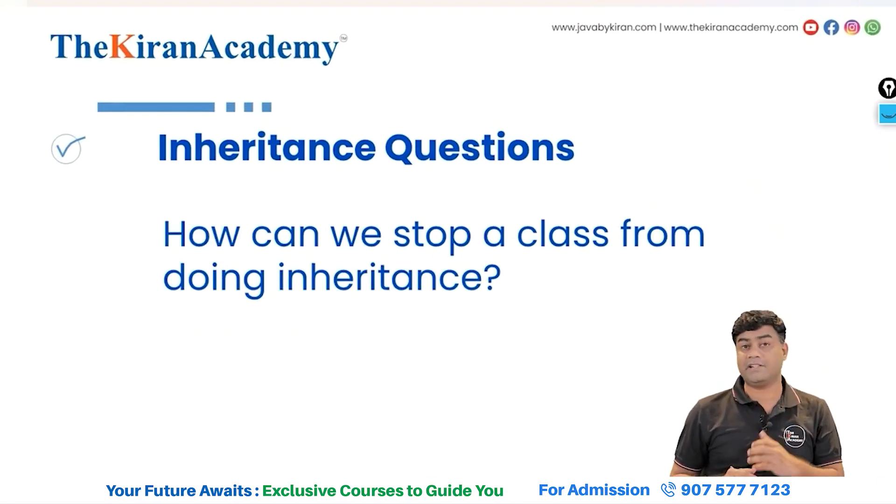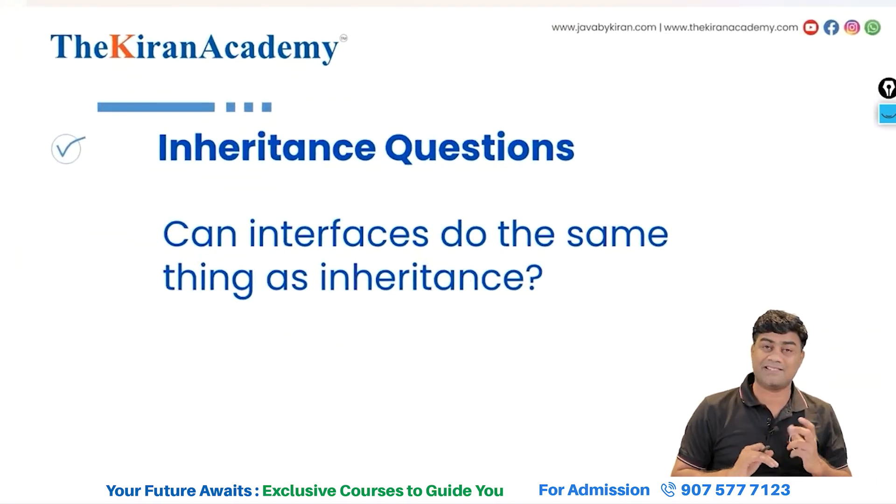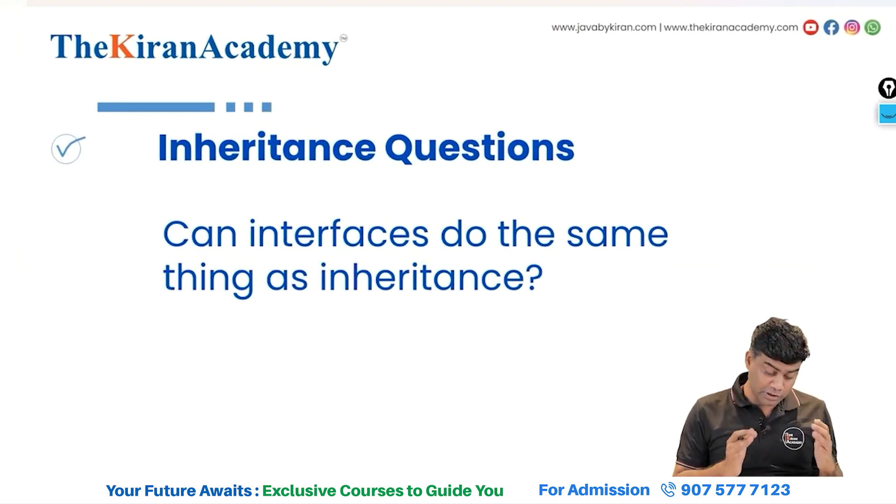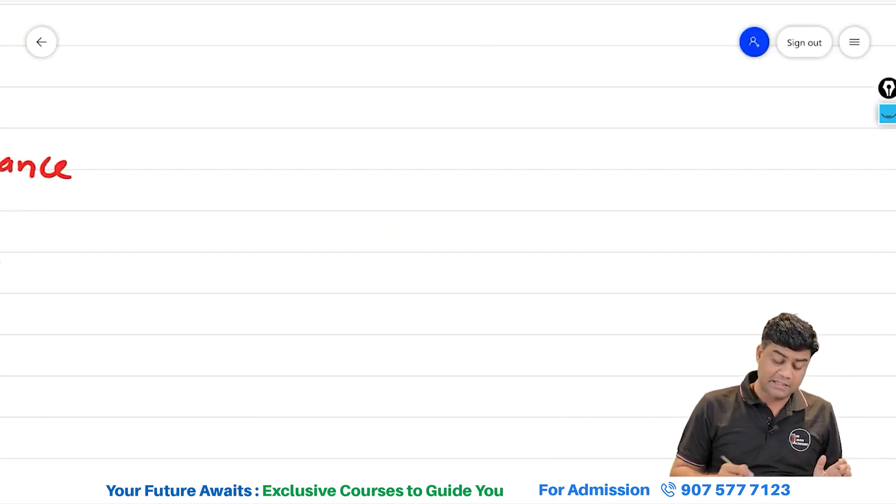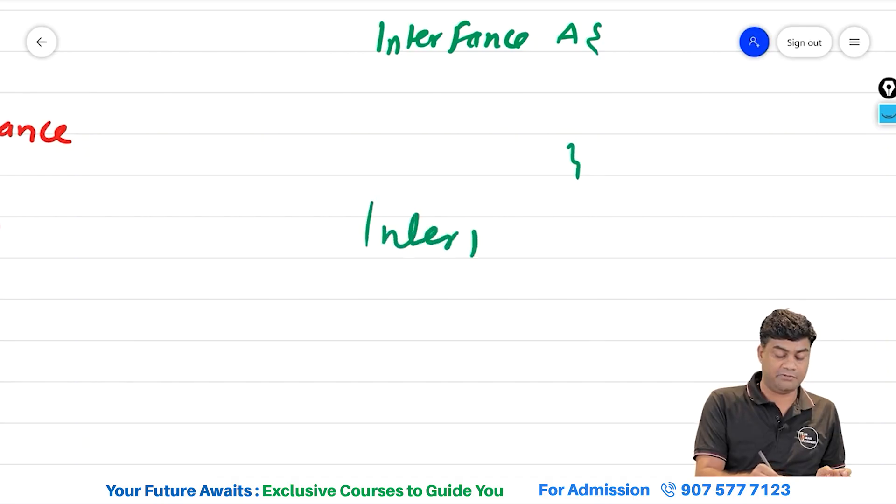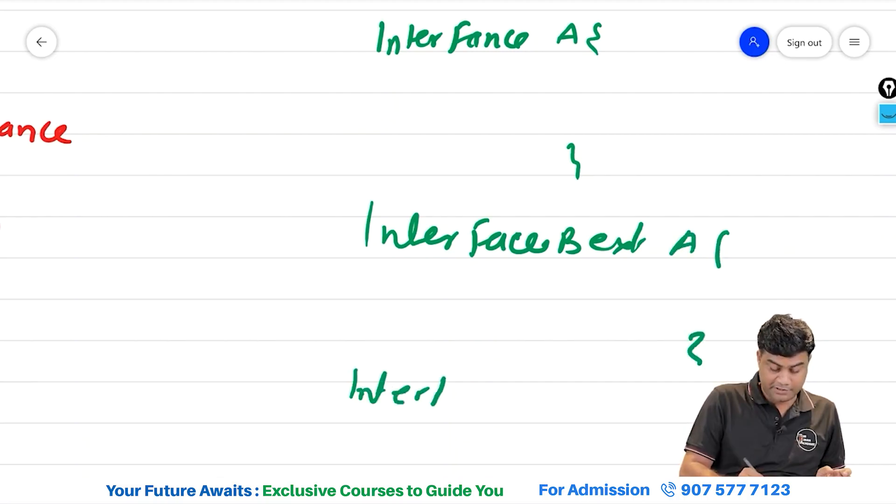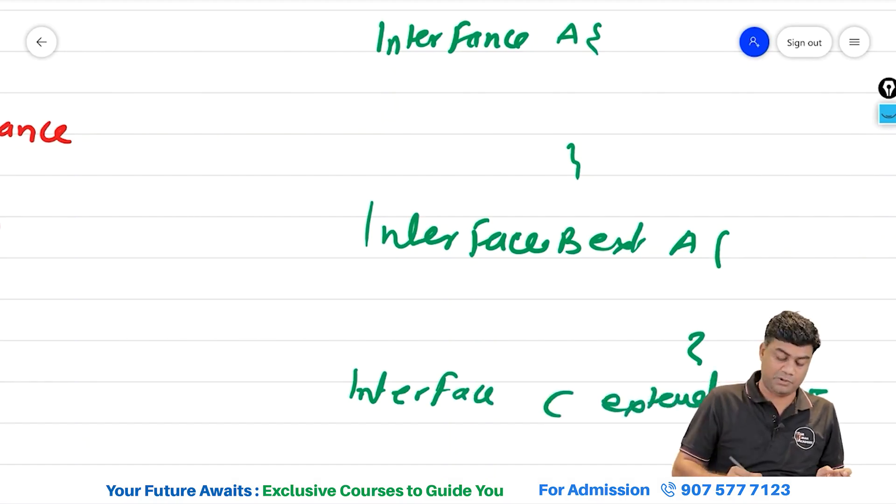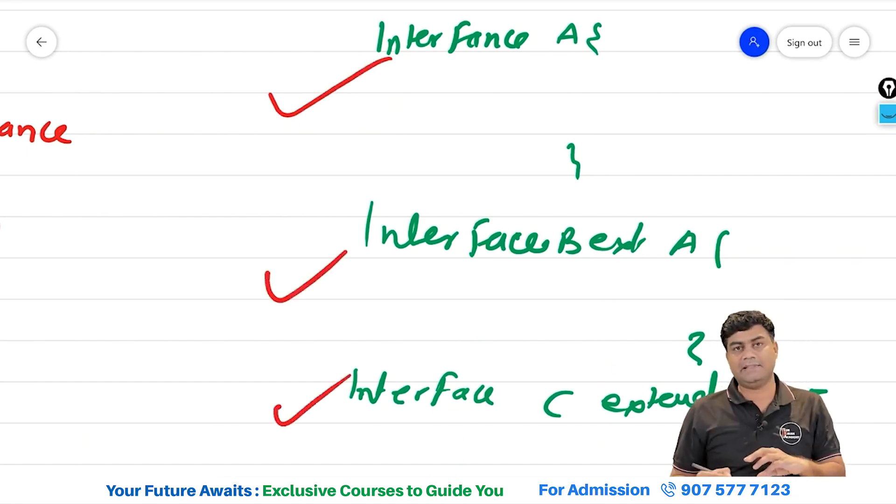How can we stop class from doing inheritance? By making any class as final, you can stop. Can interfaces do the same thing as inheritance? Yes, in interfaces also you can have inheritance like interface A and then you can have interface B extends A. Even you can have interface C extends A. That is possible in Java. In case of classes and in case of interfaces, it is one and the same thing.